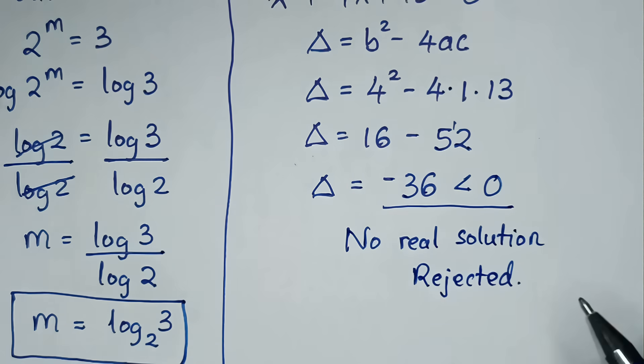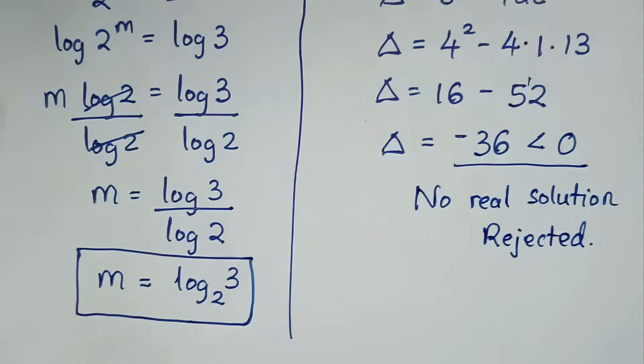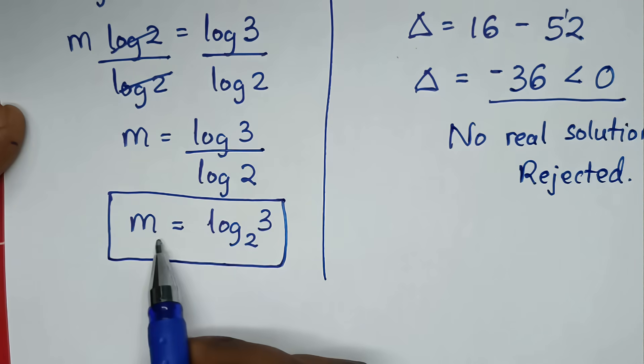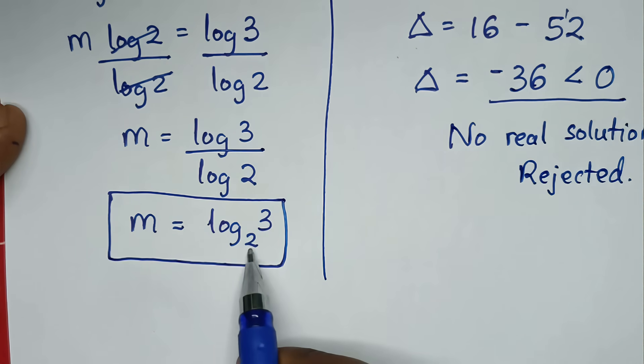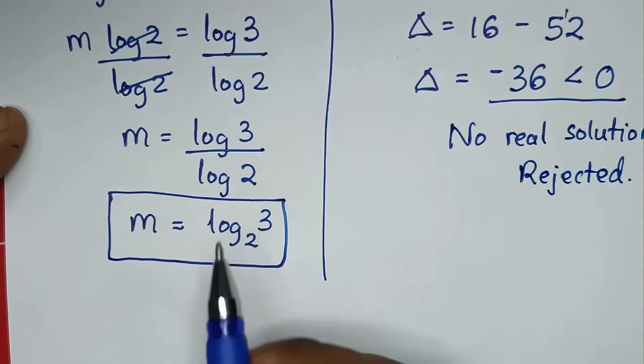Since the discriminant is less than 0, there is no real solution. If there is no real solution, this solution will be rejected. So our only value of m is m equal to log of 3 base 2.